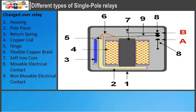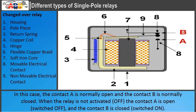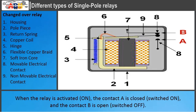Changeover relay: contact A is normally open and contact B is normally closed. When the relay is not activated, contact A is open and contact B is closed. When the relay is activated, contact A is closed and contact B is open.